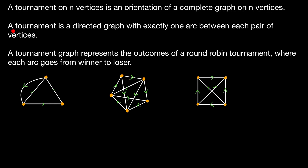Another way to think about it is that a tournament is a directed graph with exactly one arc between each pair of vertices. So for each pair of vertices, there is an arc between them, but there's only one. The arc is either going to go from U to V or from V to U, but not both — only one.